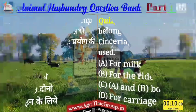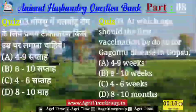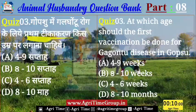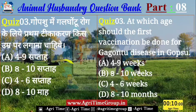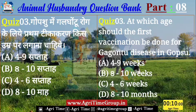बढ़ते हैं अगले question की ओर — question number 3। यह रहा आपके screen पर। गौपशु में गलघोटू रोग के लिए प्रथम टीकाकरण किस उम्र पर लगाना चाहिए? Option में दिये हैं: 4-9 सप्ताह, 8-10 सप्ताह, 4-6 सप्ताह, या फिर 8-15 सप्ताह। तो चलिए बतलाईए quiz 3 के लिए right answer क्या होगा?